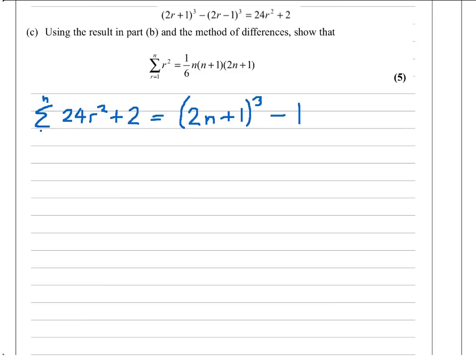I've just simplified and brought the things that I had left. I need to recognize that on the left-hand side, the sum of 24r² would be the same as 24 times the sum of r² from 1 to n. And that's good, because that's what I'm trying to find. Plus the sum of 2, n times.